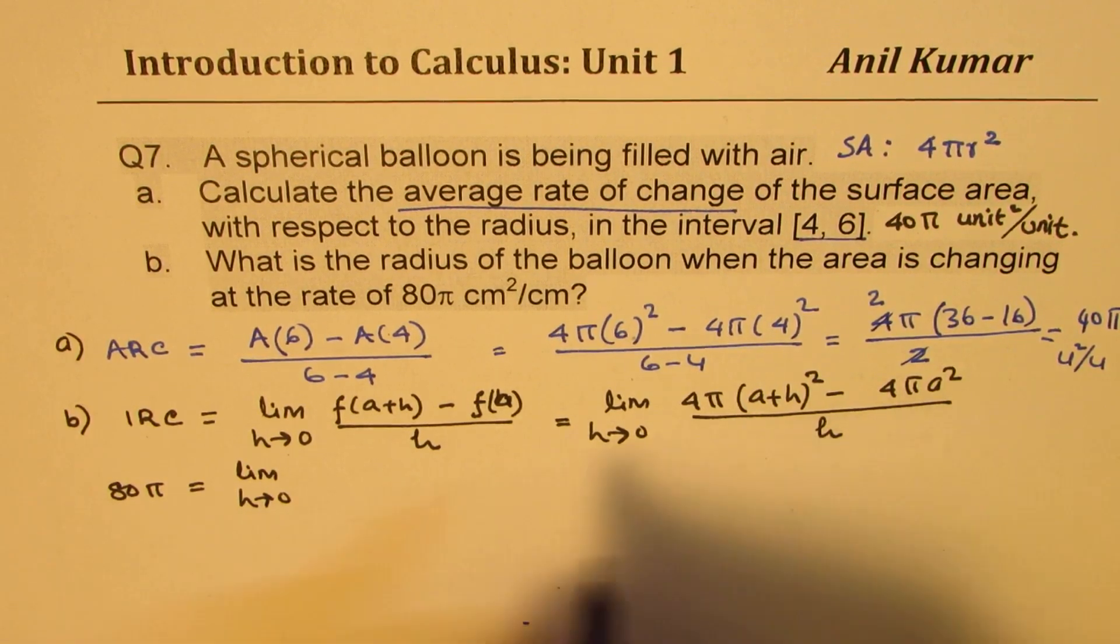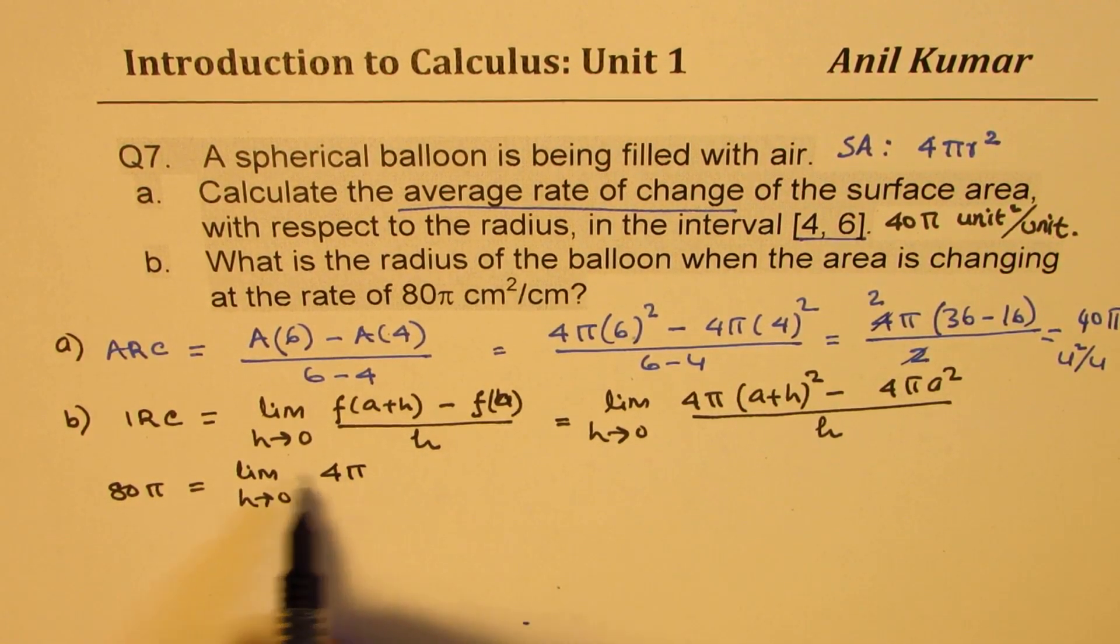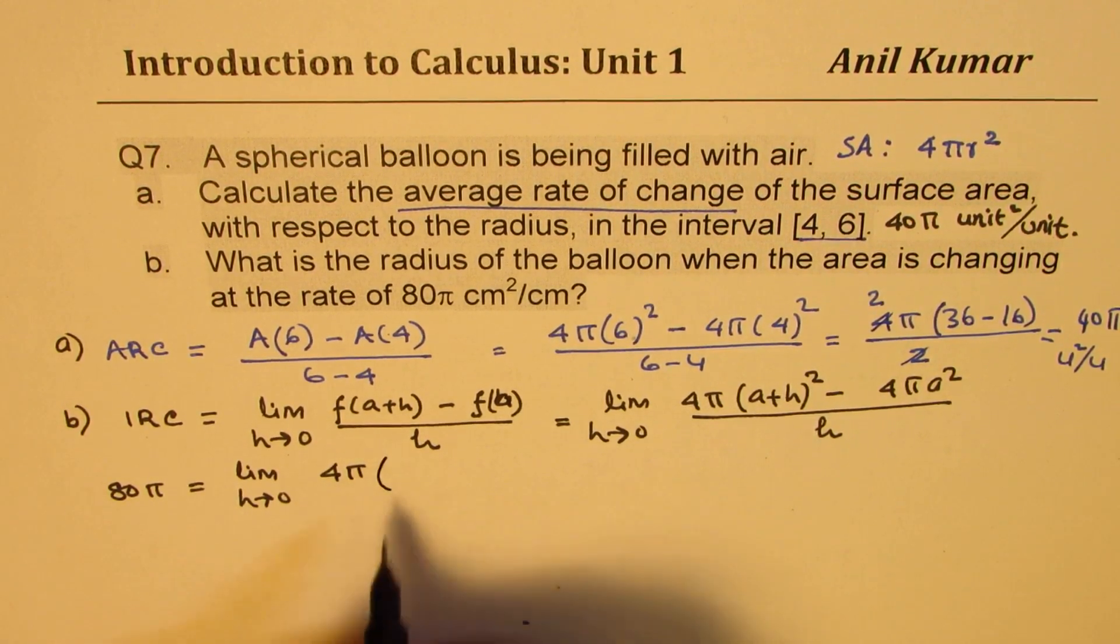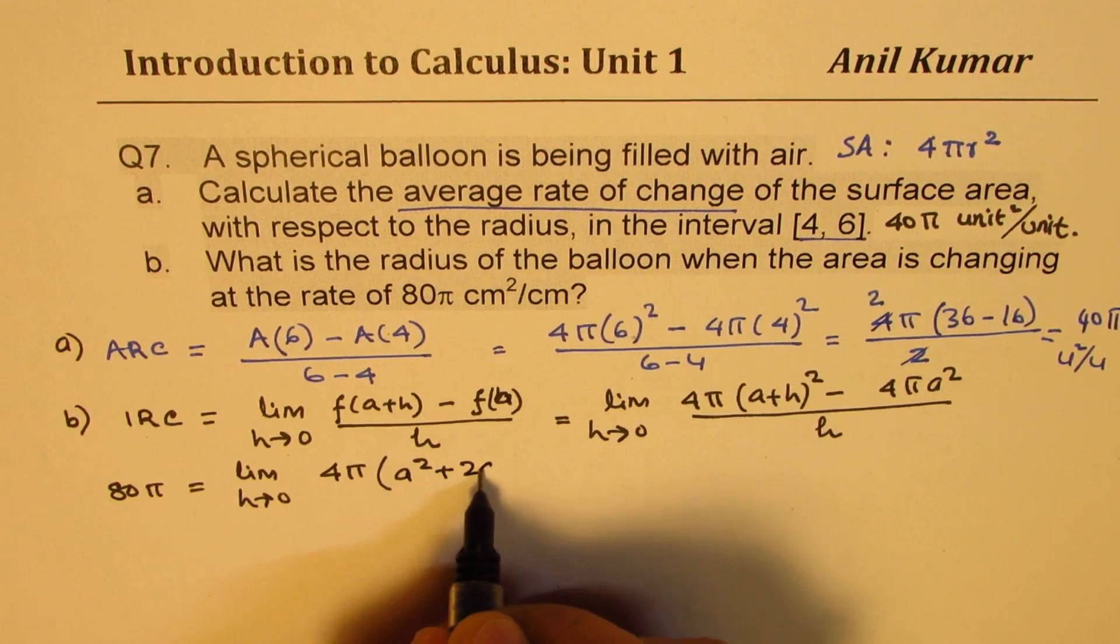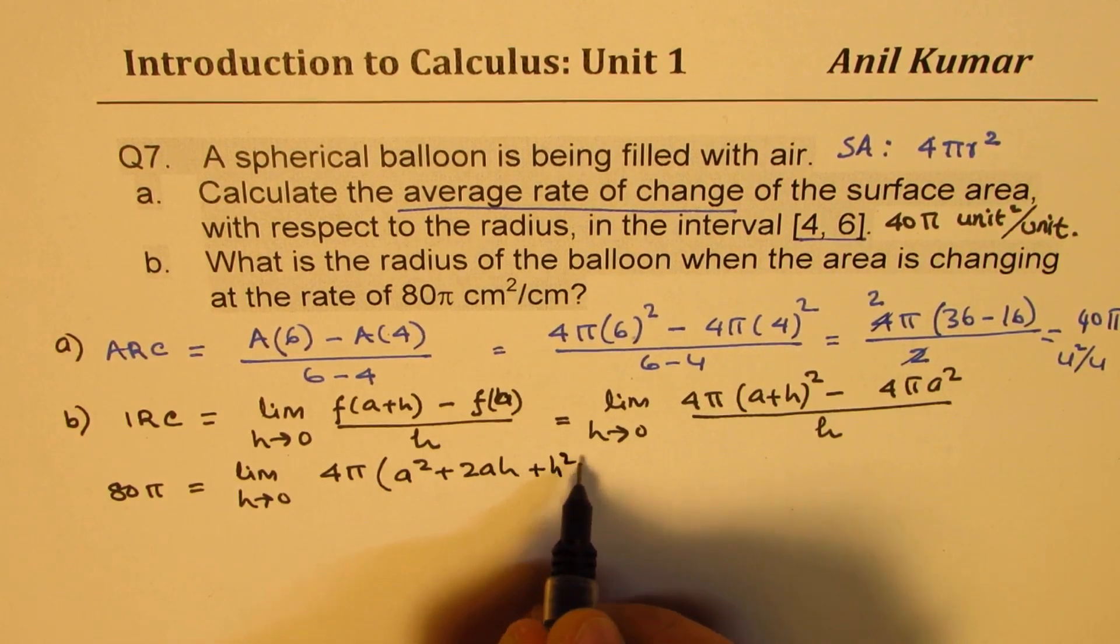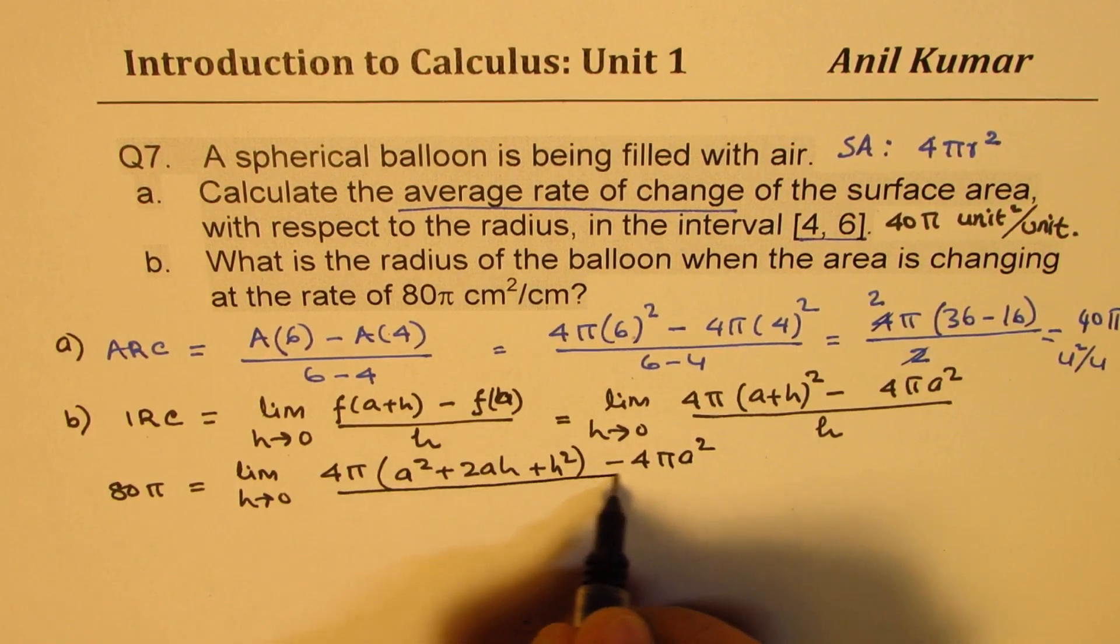Let's expand this. So we get 4π - 4π is a constant we could have taken it outside - we will multiply this with a² + 2ah + h² minus 4πa² over h.